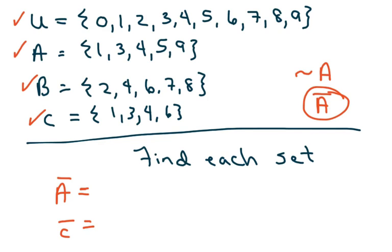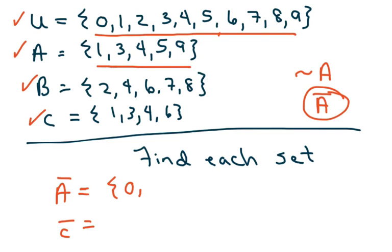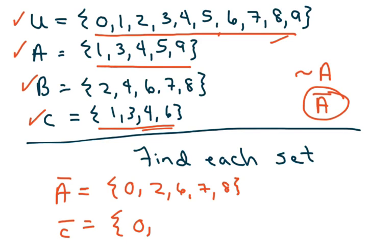The complement of A is everything that's in the universal set but not in A — in that case that would be 0, 2, 6, 7, and 8. The complement of C is everything not in C but in the universal set, so that would be 0, 2, 5, 7, 8, and 9. We're going to do double complements and things like that, so it's going to get a little harder. Please write these down.